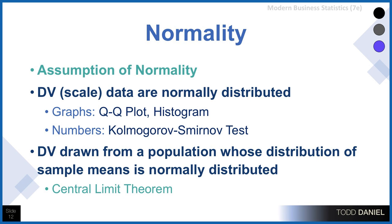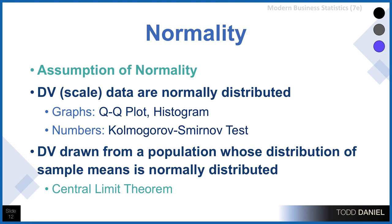The assumption of normality is that the dependent variable — the scaled data — is normally distributed. We can assess this through graphs like a QQ plot or a histogram, or through numbers like a Kolmogorov-Smirnov test. But it's important to remember the assumption is not really that the dependent variable itself is normally distributed, but rather that the dependent variable is drawn from a population whose distribution of sample means is normally distributed. Even if the distribution of the actual dependent variable is not normally distributed, if you have a large sample size — at least 30, and better if 50 or 100; the more skewed your data, the larger the sample size you'd want — the test will be robust to violations of normality.